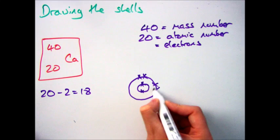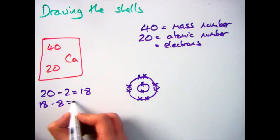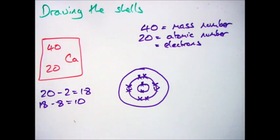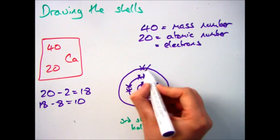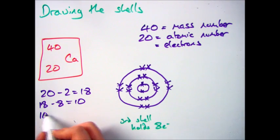What you need to do is remember the rules that two can go in the first shell, leaving me with 18, eight can go in the second shell, leaving me with 10, then eight can go in the third shell, leaving me with two remaining.